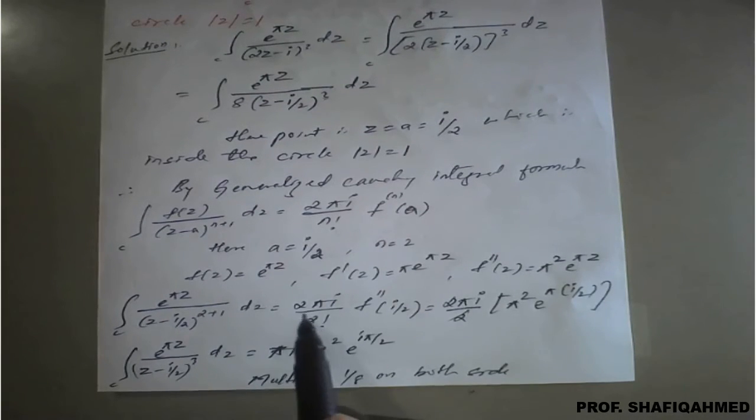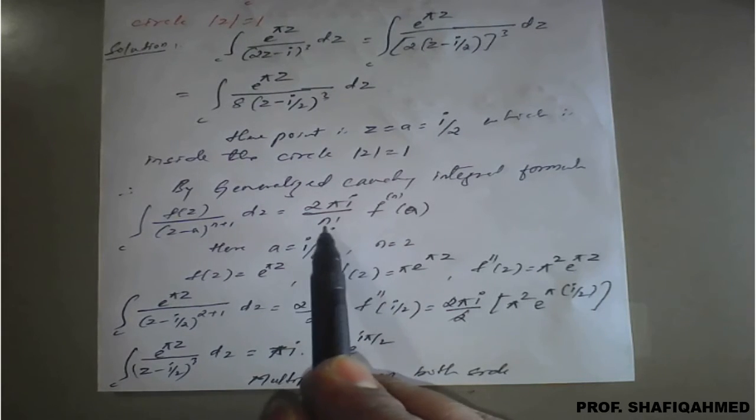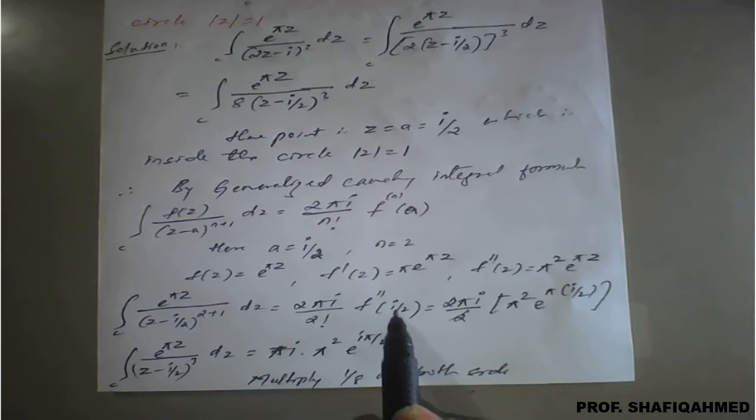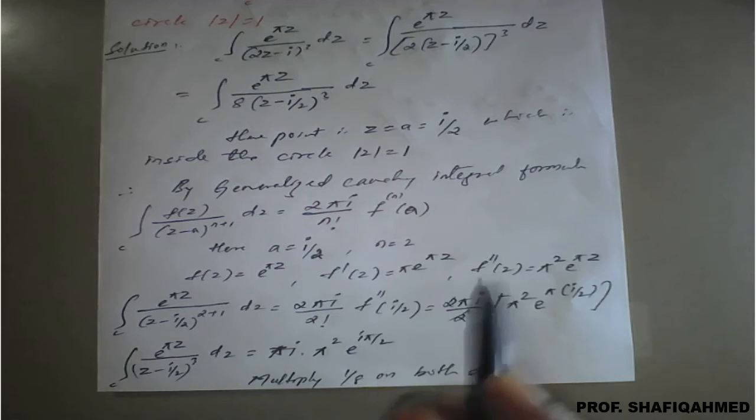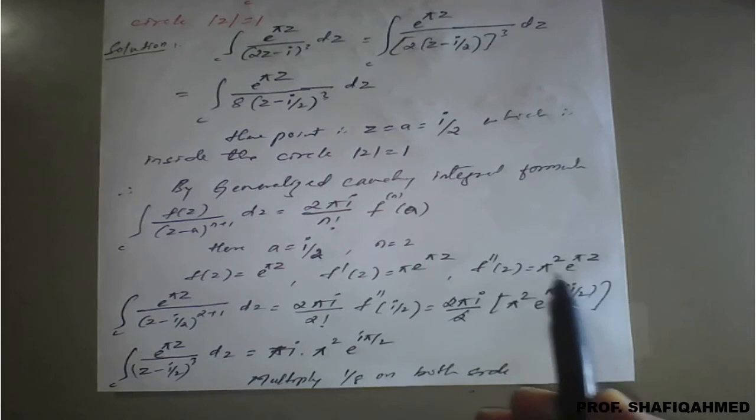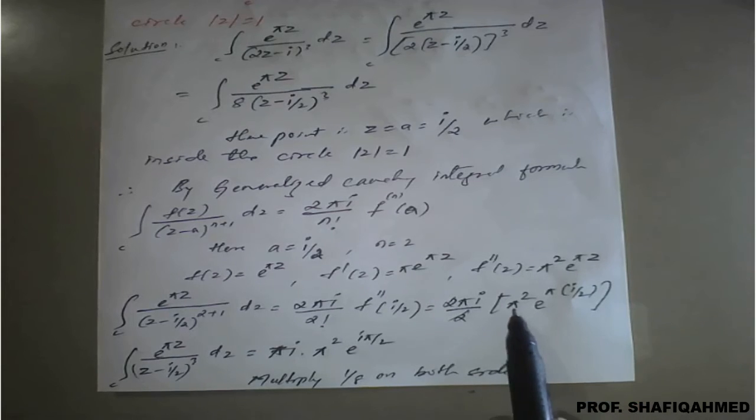On simplification, apply these values: 2 pi i upon 2 factorial, because here we need to simplify n is 2 factorial. f double dash of a, where a is i upon 2. But what is f double dash of z? Here you need to apply the value of z as i upon 2.